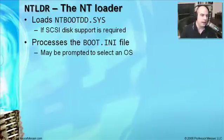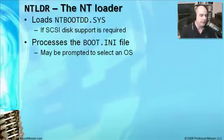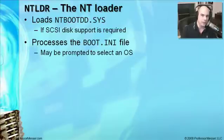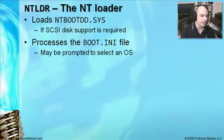Next, the NT Loader processes the boot.ini file. This file gives you a list of different operating systems you can start, or options for starting the same operating system. If you're dual booting — for example, running Windows 2000 and Windows XP — a menu pops up asking which one to run. All that information and the locations of those operating systems are documented in boot.ini.